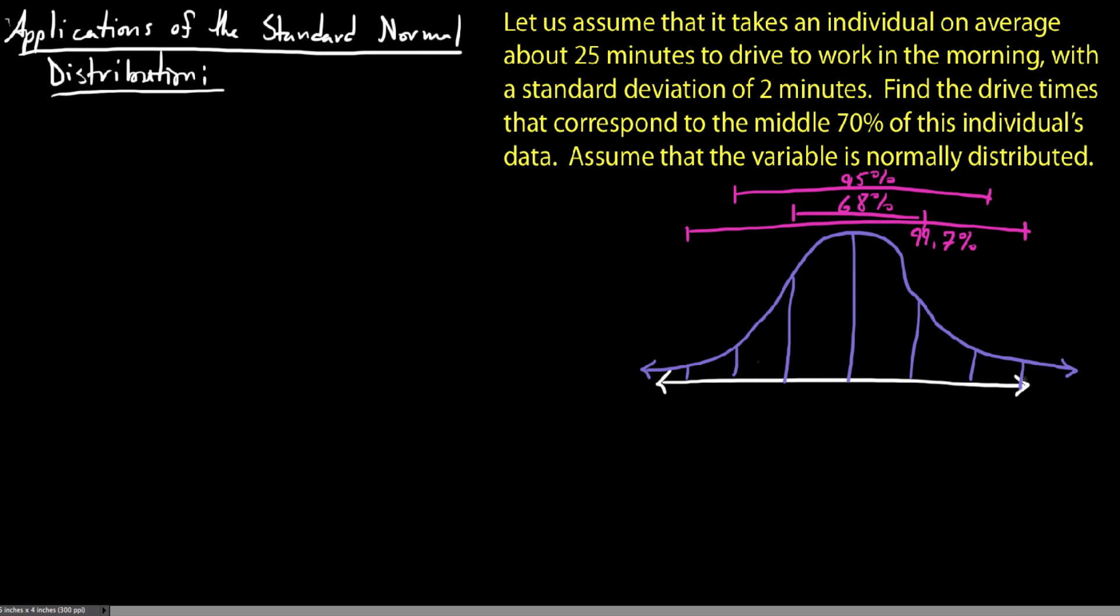And between three standard deviations of the mean, it's approximately 99.7% of the data. So you'll notice that after this third standard deviation on either side, probabilities get pretty small, or at least significantly small with respect to the scale that we're working on.